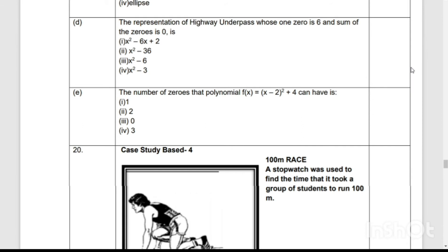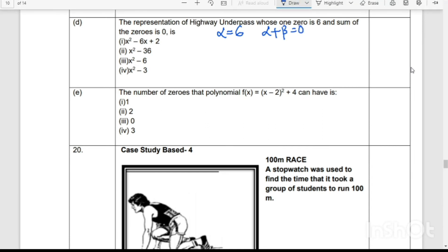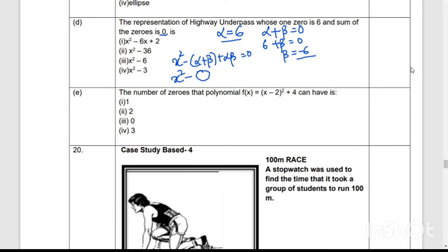Here representation of highway underpass whose one zero is 6 and sum of the zeros is 0. Let me assume alpha and beta are the two zeros. So one zero they have given as 6. Sum of the zeros is given as 0 here. So we will find beta value. The other zero beta will be -6. Now what they are asking us is to form a quadratic equation using alpha as 6 and beta as -6. So here we have a formula: x² - (α+β)x + αβ = 0. This is a standard form to frame a quadratic equation. x² as it is, this becomes 0 because 0 × x is 0, plus 6 × -6. So here we have our answer -36. So this will be x² - 36.